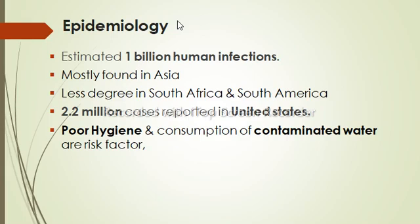The epidemiology of Trichuris trichiura shows worldwide distribution, with an estimated 1 billion human infections. Infections are found on all continents, especially in Asian countries, and to a lesser degree in South Africa and South America. Within the United States, infections are rare overall but may be common in the rural southeast, where 2.2 million people are thought to be infected. Poor hygiene and consumption of fecally contaminated food or shaded moist soil are associated risk factors.